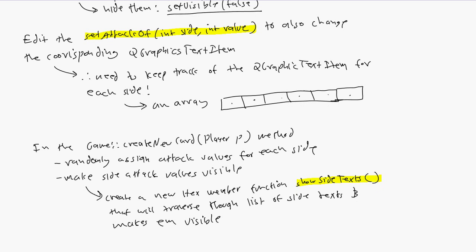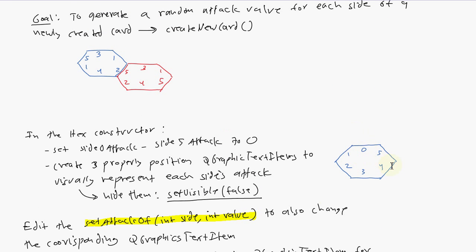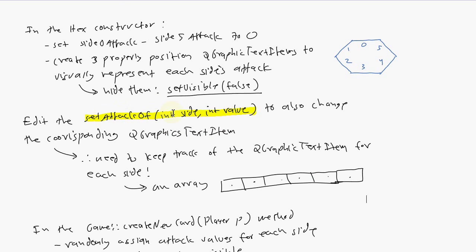The final thing we're going to do for this tutorial is go back inside our createNewCard member function. This function is part of the game class and creates a new card for a specified player and adds it to the decks. Before creating the card, we want to change the attack values from zero to random values using our setAttackOf member function. Then we also want to show the side text using a new member function called showSideText, which will traverse through our list of texts and set them to visible.